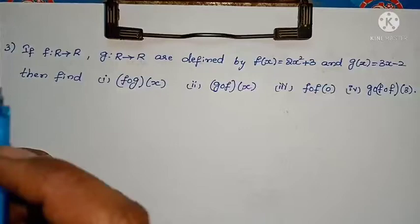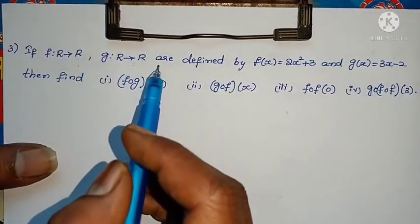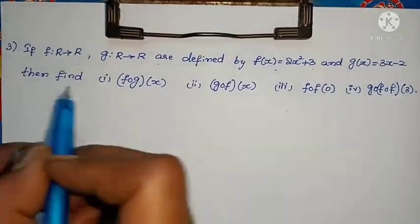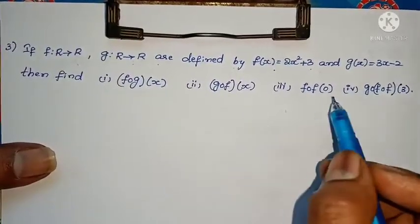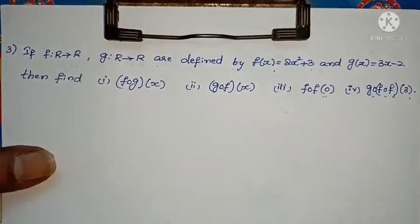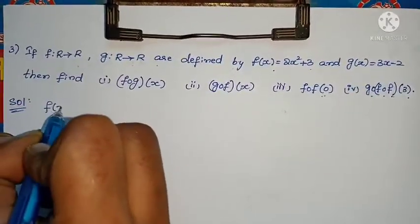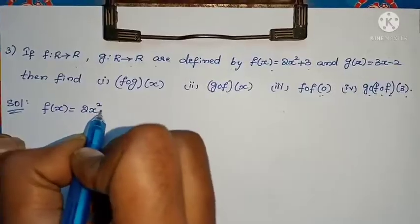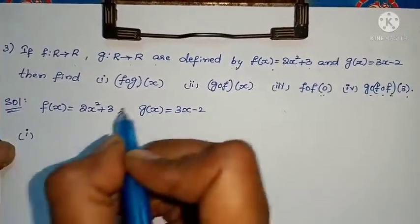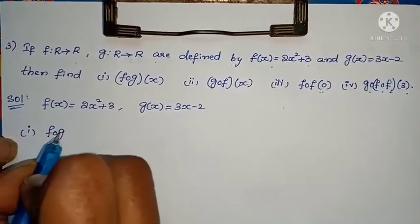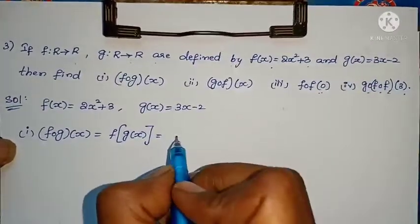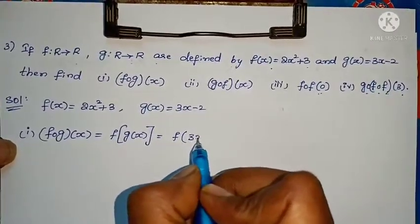Next problem. f maps R to R, g maps R to R, defined by f(x) = 2x² + 3 and g(x) = 3x - 2. Find f∘g(x), g∘f(x), f∘f(0), and g∘f∘f(3). First write what's given: f(x) = 2x² + 3, g(x) = 3x - 2.